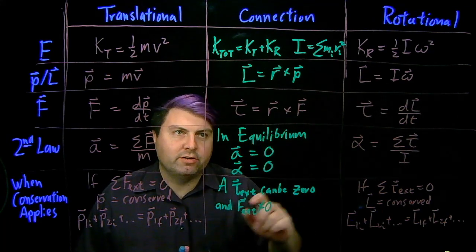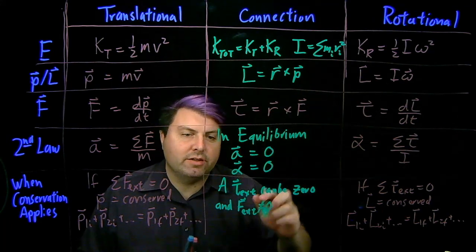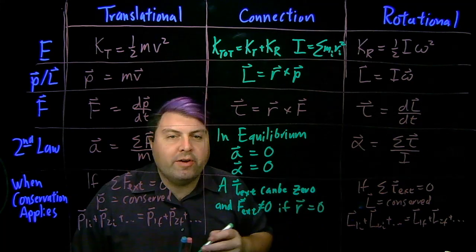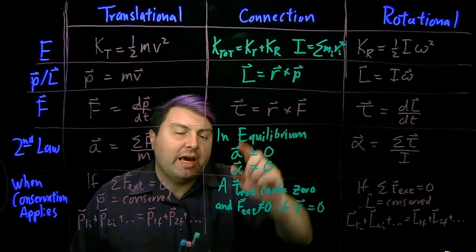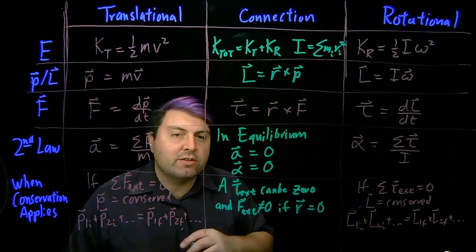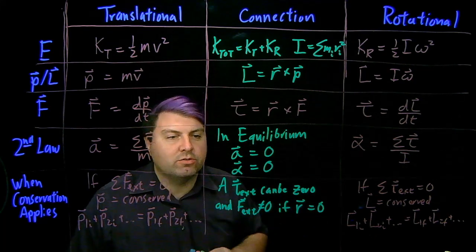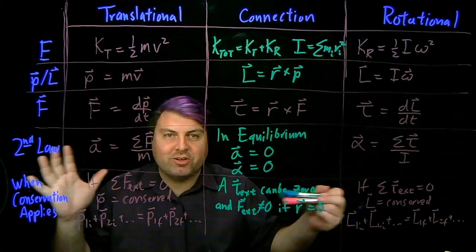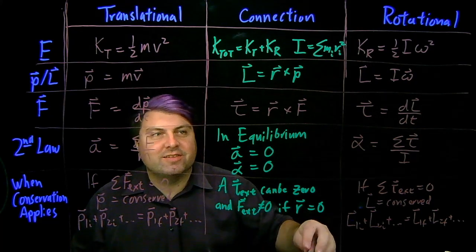Well, if this radius is zero. So if we have any forces exerted right on the axle, then we can have external forces not be zero, but we can have the external torques be zero. So this is a nice little table trying to just connect all of the things that we have.